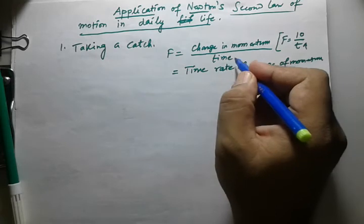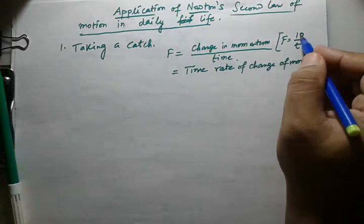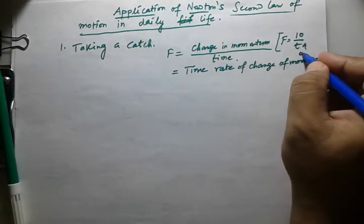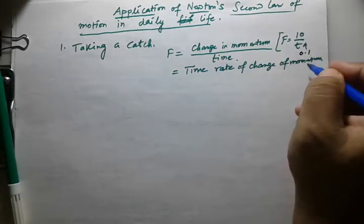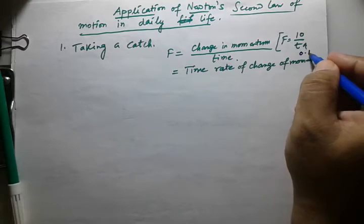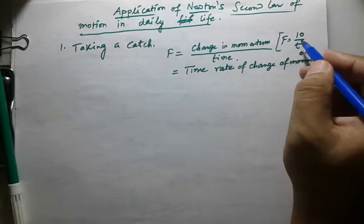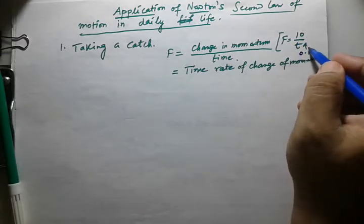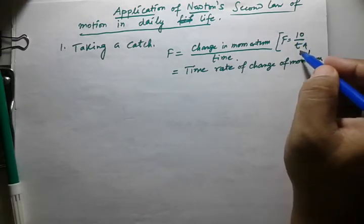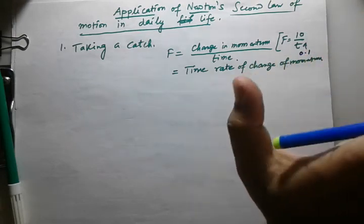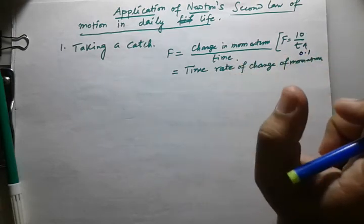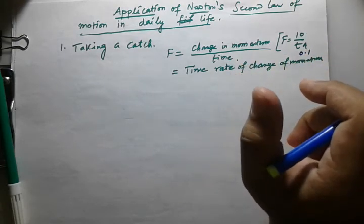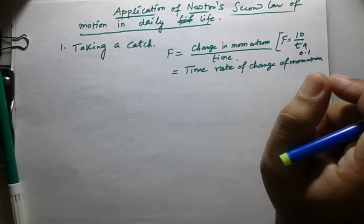If the time becomes very small, like 0.1 seconds, then with F = 10/t, the force would be 100 Newtons. So if time is less, the force is more. That is why the fielder lowers his hand while catching the ball.